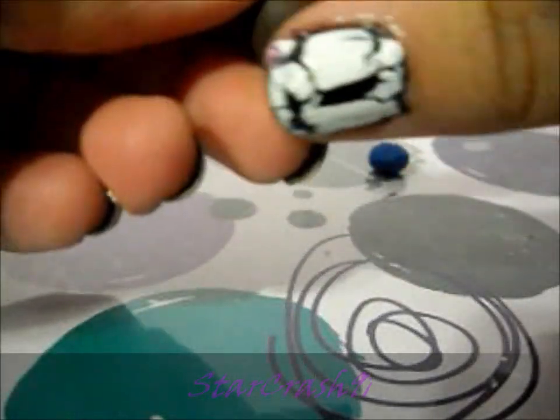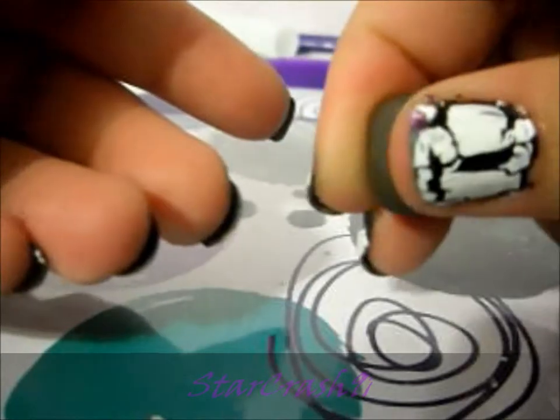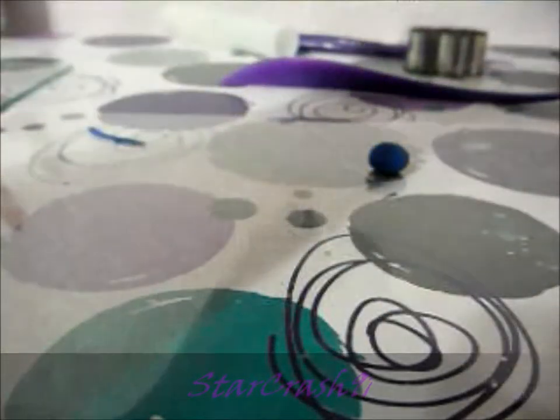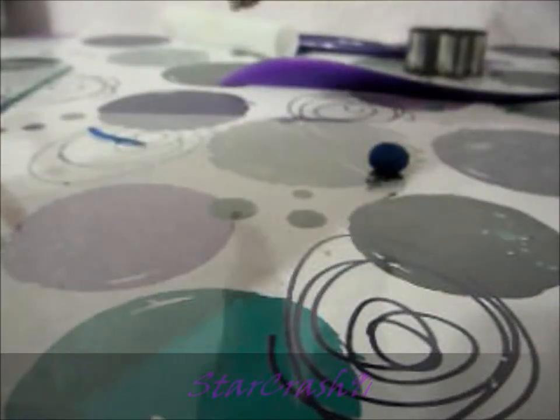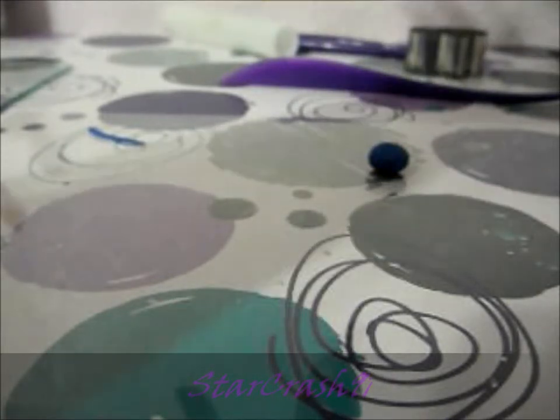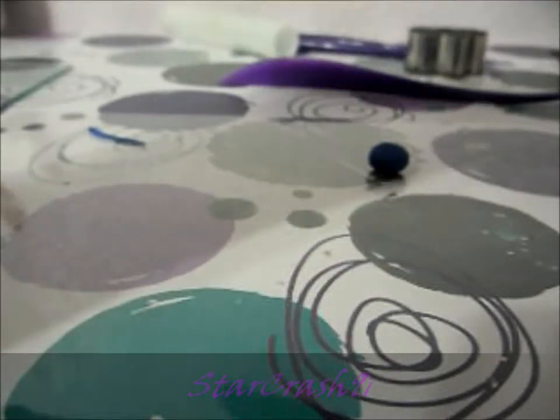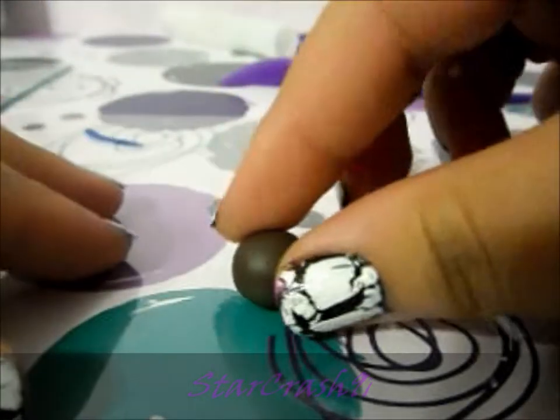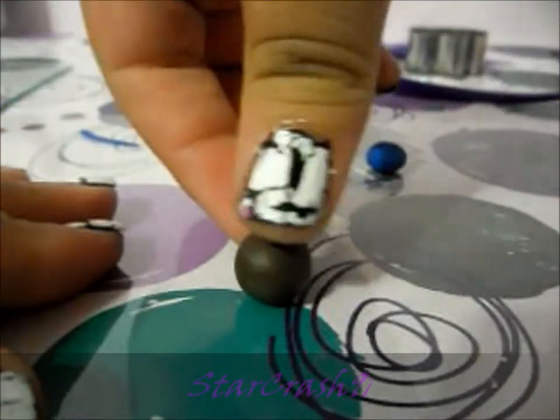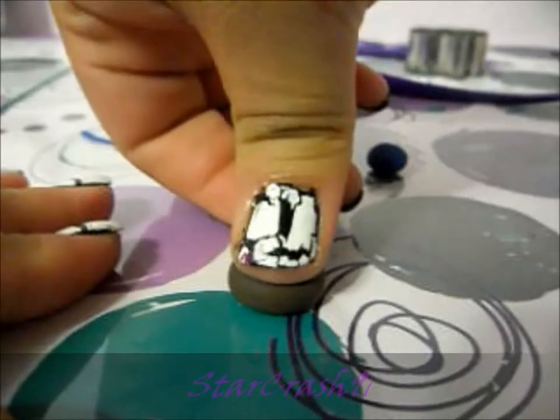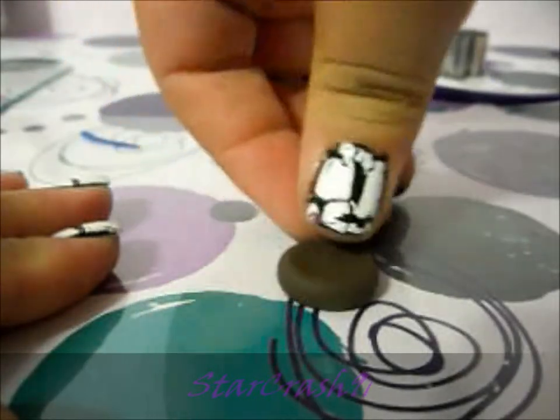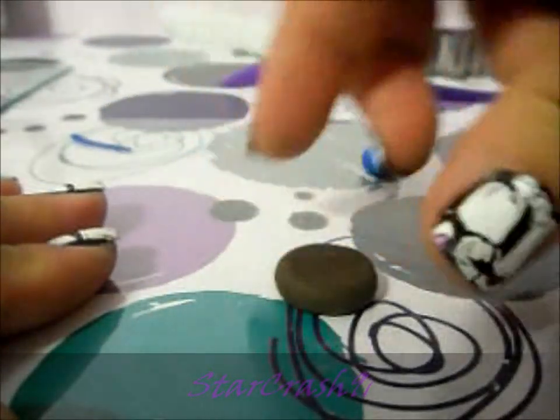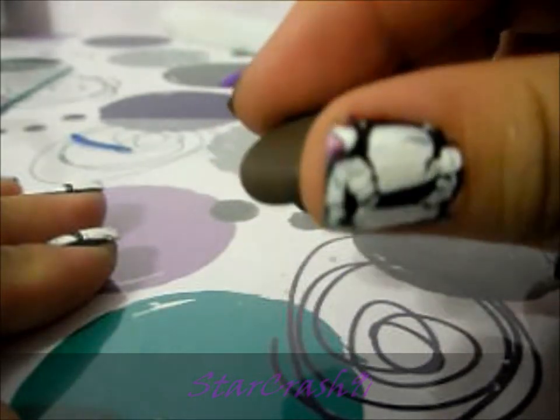So just moisturize it by rubbing it together with your hands like this. Okay, once that's done, you're going to squish it with your thumb like so, and it should make like a little dent like that.